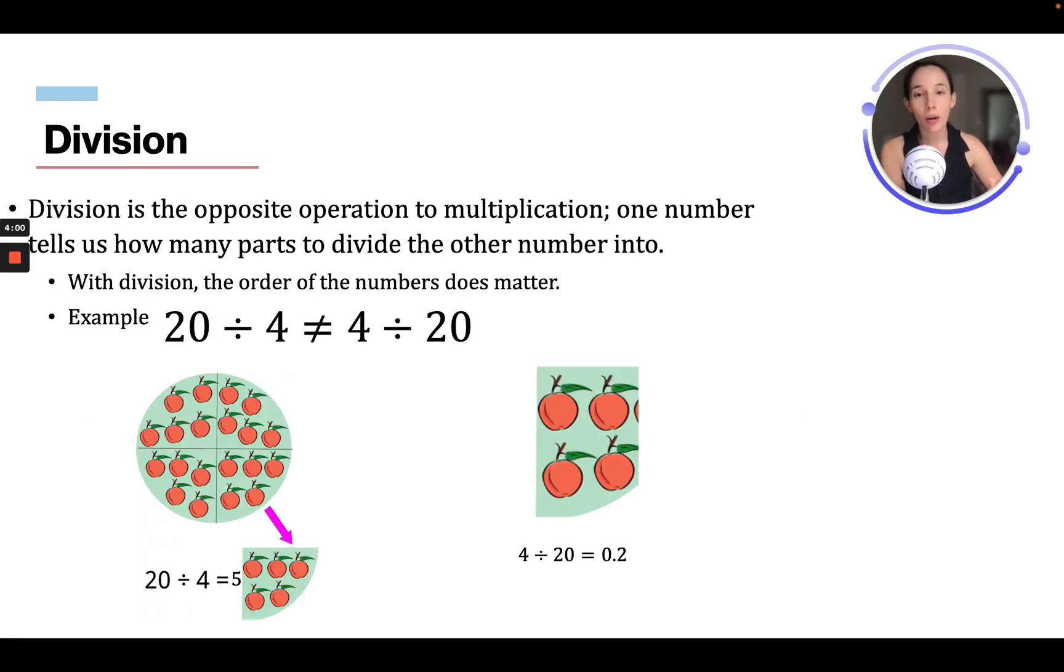So division is the opposite operation to multiplication. One number tells us how many parts to divide the other number into. With the division, the order of the number does matter. Example: 20 divided by 4 is not equal to 4 divided by 20.